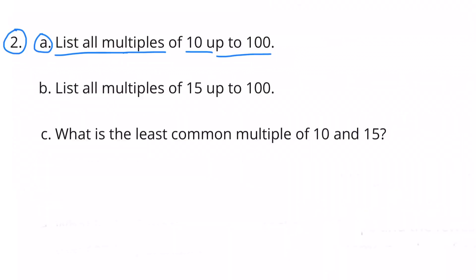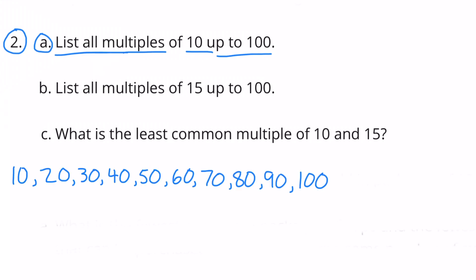Number 2. A. List all multiples of 10 up to 100. To list multiples, you just count by that particular number. For example, to list multiples of 10, you'd count by 10: 10, 20, 30, 40, 50, 60, 70, 80, 90, 100.